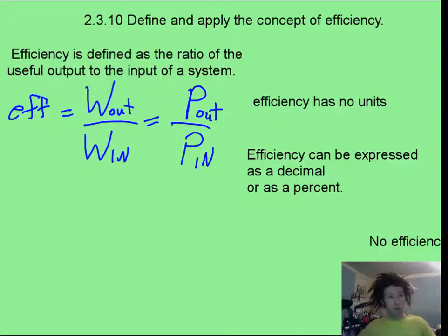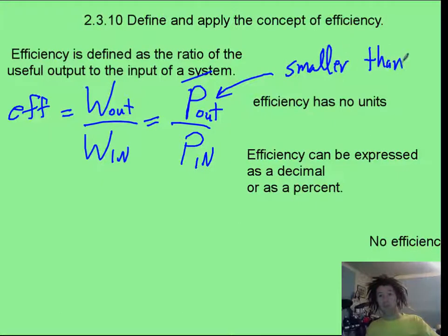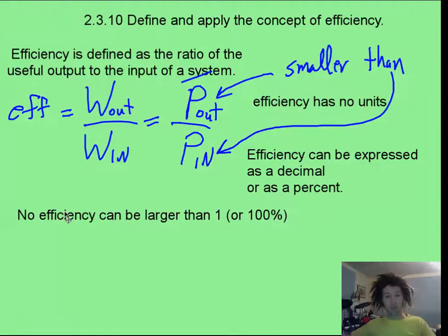Now, hopefully, you're also realizing that your output must always be smaller than the input. So, since you're going to have your small number on top and your bigger number on bottom, all your efficiencies are going to be less than 1. So, you can always say that efficiency has to be less than 1, or 100%.